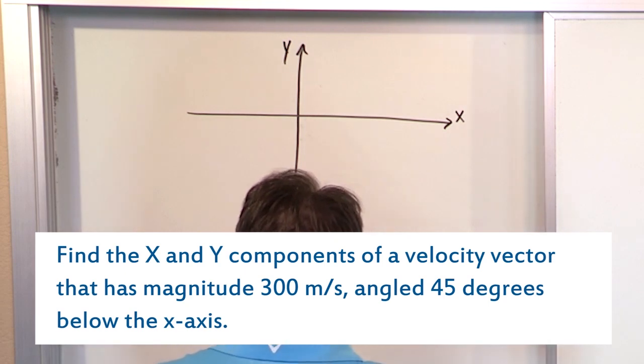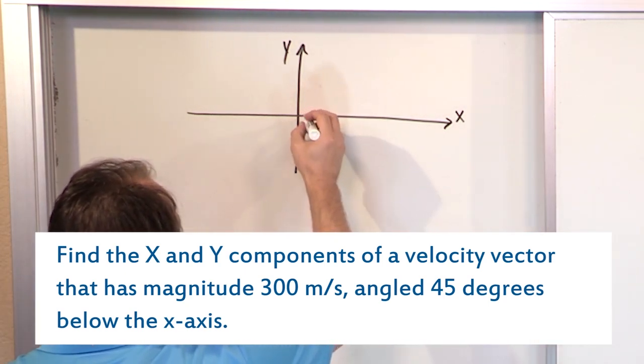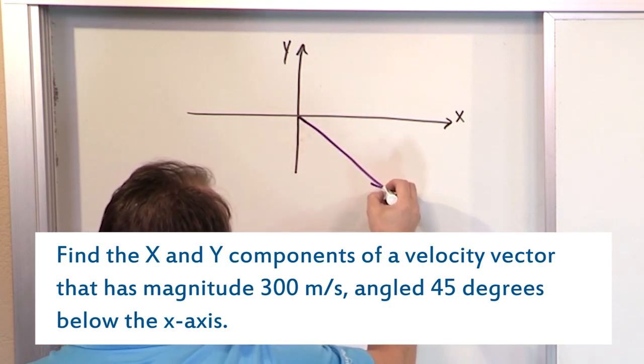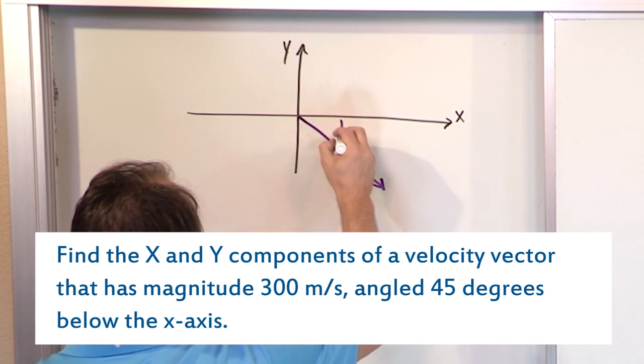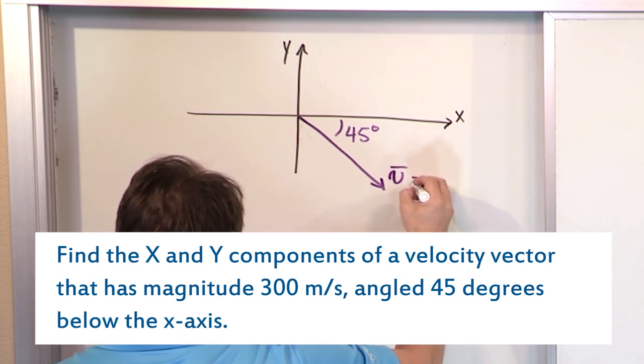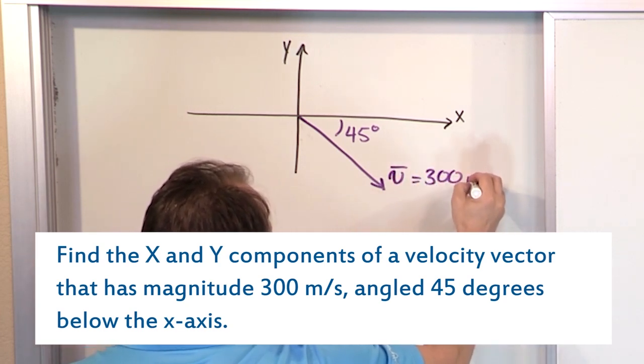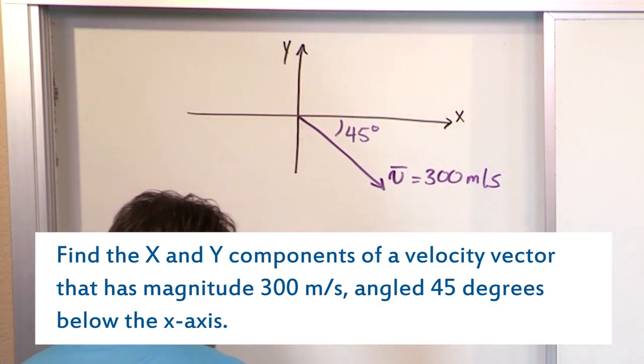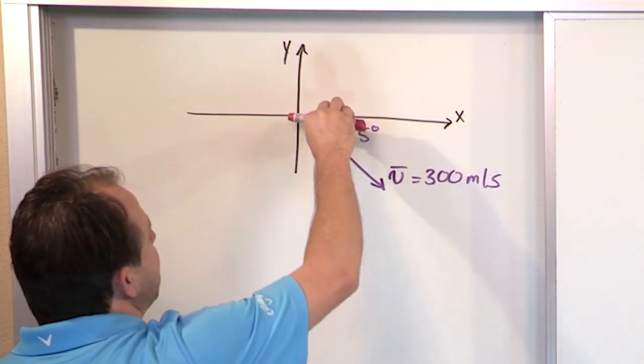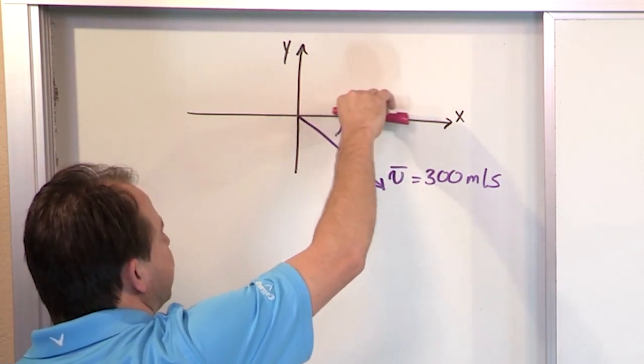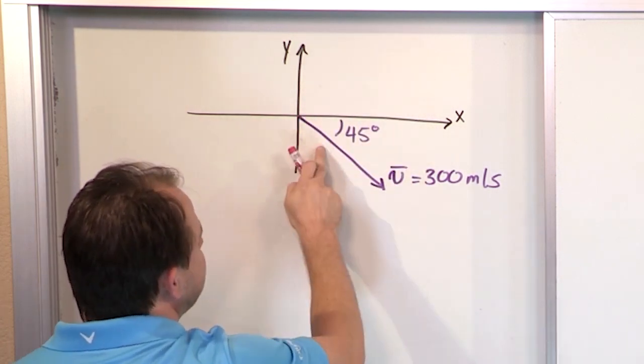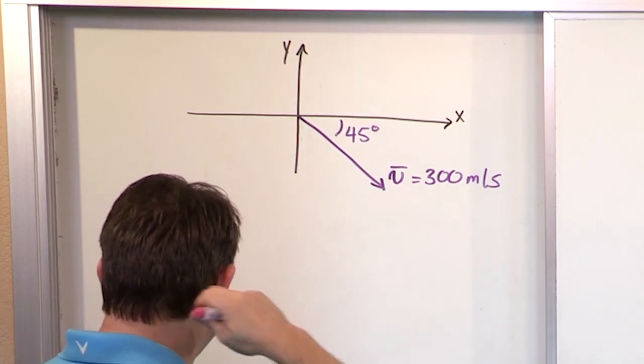The vector is 45 degrees below the x-axis. So here's the x-axis, below the x-axis is here. So 45 degrees, that's pretty close to it, like this. So this angle is 45 degrees below the x-axis. And then the vector itself has a magnitude of 300 meters per second. We want to find out what the x and y component is. The x component is going to be here, pointing in this direction, and the y component is going to be pointing down like this. The sum of those two components give the mixture of those two, give the total vector that we have 300 meters per second.